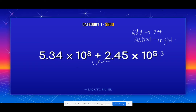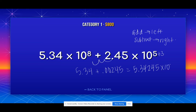So that gives me 5.344 plus 0.00245. When I add those together, I get 5.34245, and then times 10 to the eighth power. They both now have the same exponents — 5 plus 3 is 8, and we have the 8 originally.